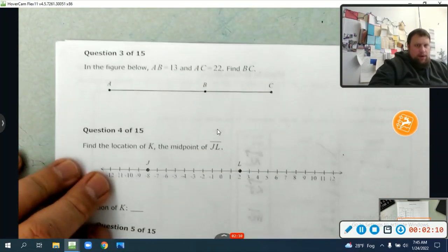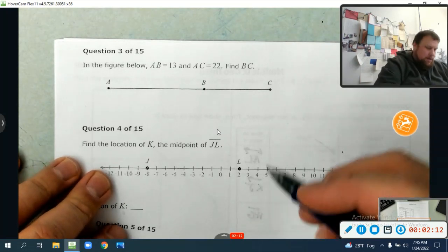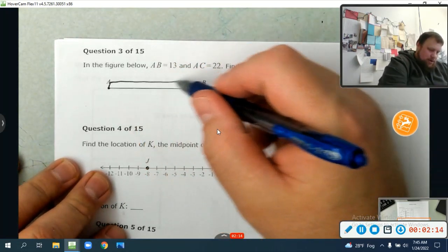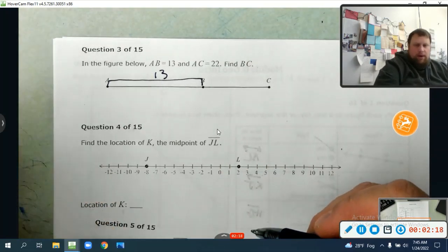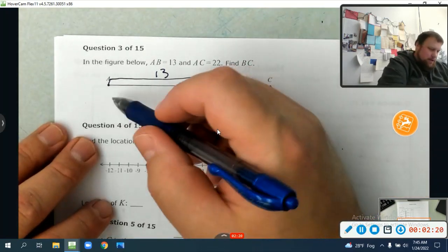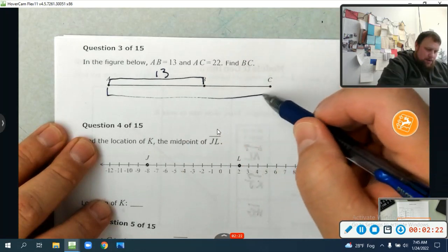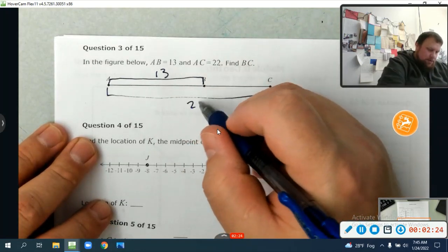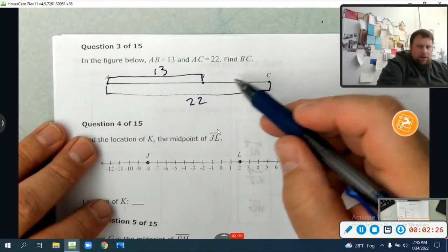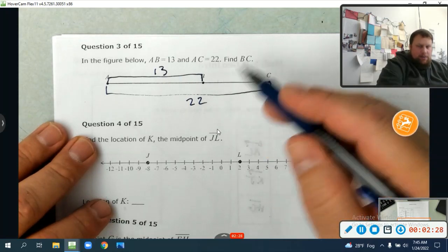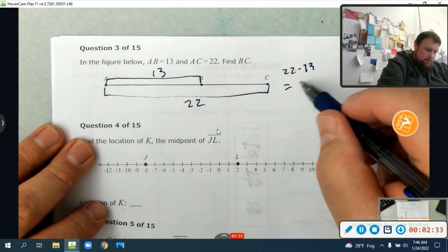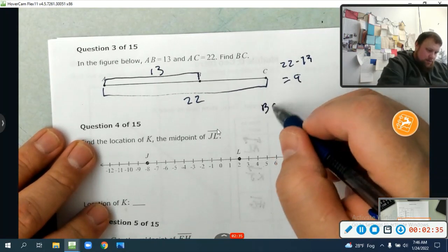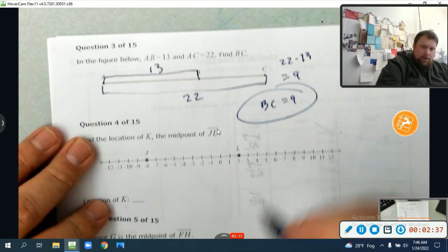So we're going to look at three. In the figure below, AB is 13. I encourage you guys just start labeling it the way you see me do it. It's how you show work. AC is 22. It helps you visually see what's going on. So clearly to get BC, I just need to subtract 22 minus 13, which is nine. So BC equals nine.